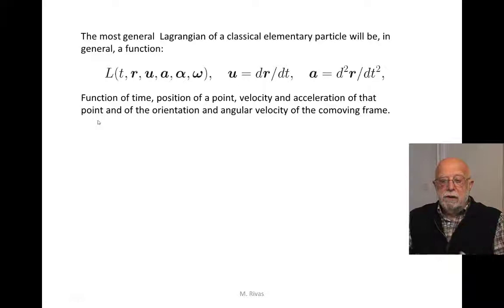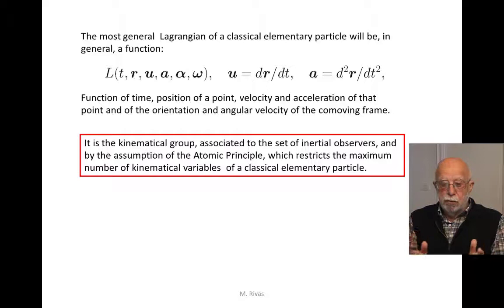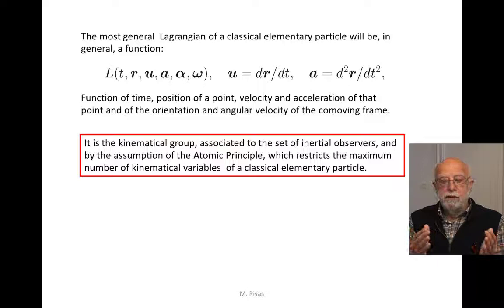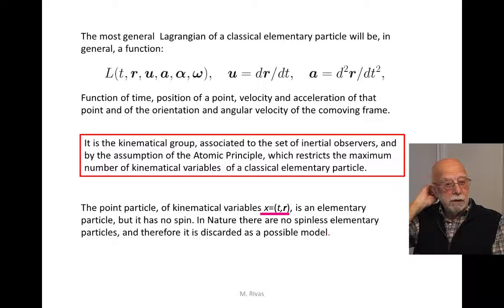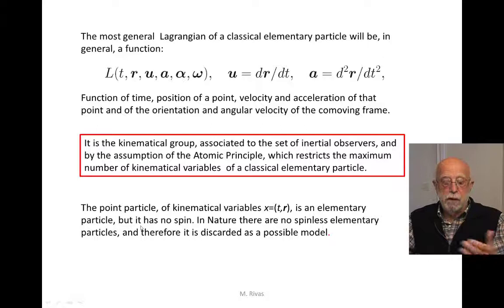The kinematical group associated to the restricted relativity principle has defined the maximum number of variables of the kinematical space, because the kinematical space has to be always a homogeneous space of the kinematical group associated to the class of inertial observers. The point particle, which has as kinematical variables time and position, is an elementary particle according to the definition, but the problem is that it has no spin. In nature there are no spinless elementary particles, so that this model is a very restricted model.